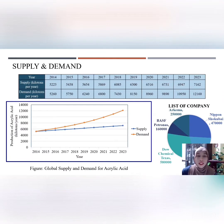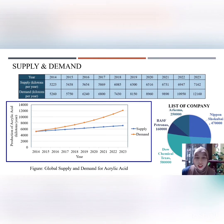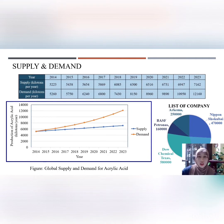Moving on to supply and demand — global demand is higher than global supply for acrylic acid. In 2019, global supply was 6,300 while global demand was 8,150 thousand tons. We expect global demand will increase continuously from 2021 to 2023, with production of acrylic acid expected to reach approximately 7,162,000 tons by end of 2023, with a CAGR of 3% per year.